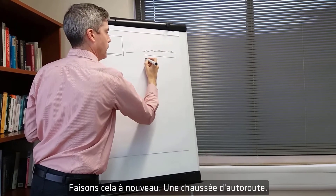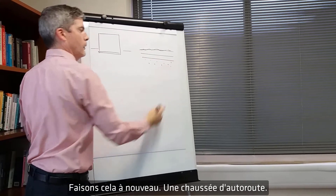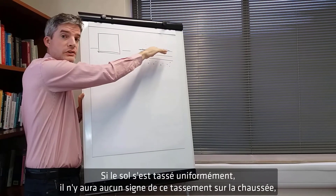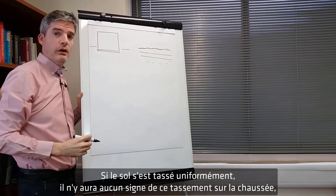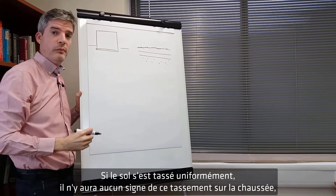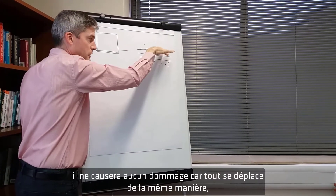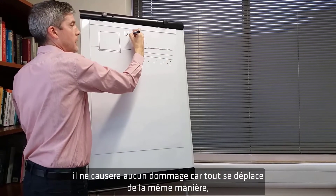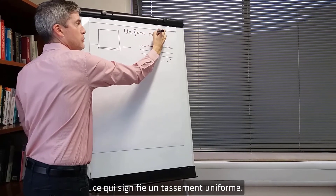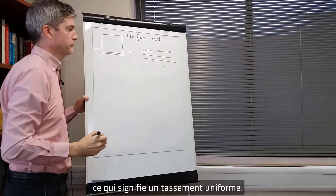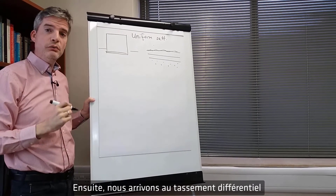A highway pavement — if the soil settled uniformly there will be no sign of that settlement on the highway pavement except for the fact that the level has dropped. It will not cause any damage because everything is moving down the same. So that is uniform settlement.